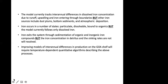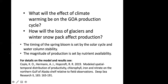Some questions to consider: what will be the effect of climate change and warming on the Gulf of Alaska production cycle? How will the loss of glaciers — which are disappearing at a prodigious rate — and the winter snowpack affect production? The timing of the spring bloom right now is set by the solar cycle, which warms the surface water and results in greater stability that triggers a phytoplankton bloom. But fresh water can also increase stability and cause a bloom, and the magnitude of production is set by nutrient availability, some of which comes in with the runoff. So I'll open it up to discussion.